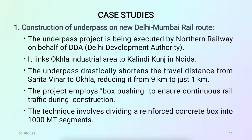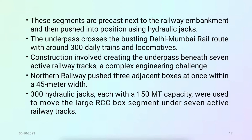Moving on to case studies — Construction of underpass on the New Delhi–Mumbai rail route. The underpass project is being executed by Northern Railway on behalf of Delhi Development Authority. It links the Okhla industrial area to Kalindi Kunj in Noida, drastically shortening the travel distance from Sarita Vihar to Okhla from 9 km to just 1 km. The project employs box pushing to ensure continuous rail traffic during construction, involving dividing a reinforced concrete box into segments of 1000 metric ton each, precast next to the railway embankment and pushed into position using hydraulic jacks.